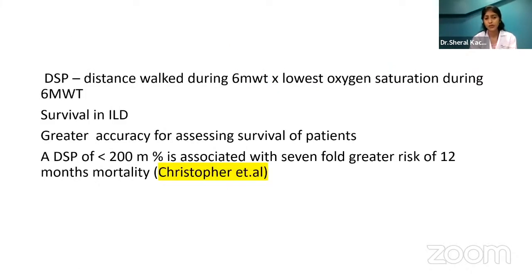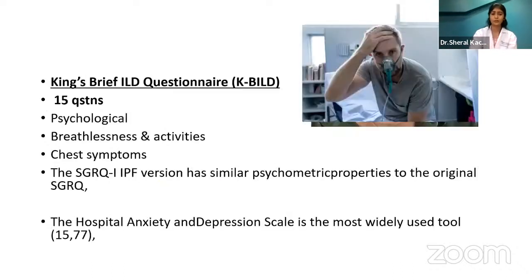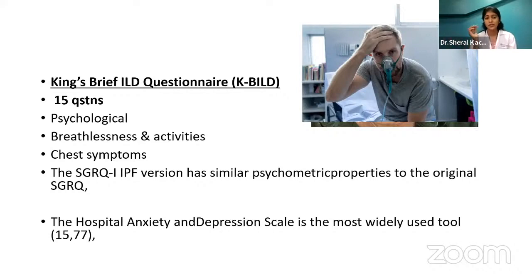The distance saturation product (DSP) is the distance walked during the six-minute walk test multiplied by the lowest oxygen saturation during the test. For example, 300 meters at a lowest saturation of 81% gives a DSP value in meter-percent. Evidence shows that a DSP of less than 200 meter-percent is associated with a 7-fold greater risk of 12-month mortality. Every patient presents differently, so use this knowledge wisely. For quality of life, the King's Brief ILD Questionnaire covers psychological, breathlessness, activities, and chest symptom domains. There is also the SGRQ-IPF version and the Hospital Anxiety and Depression Scale.